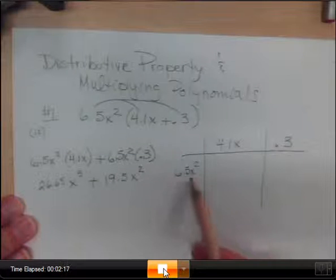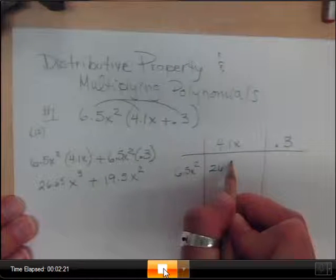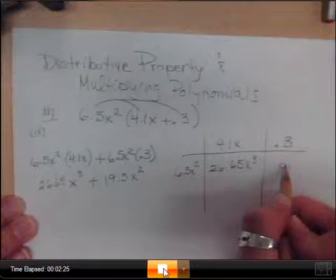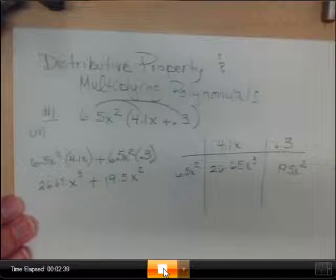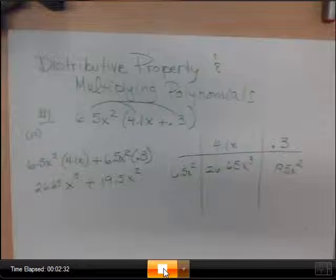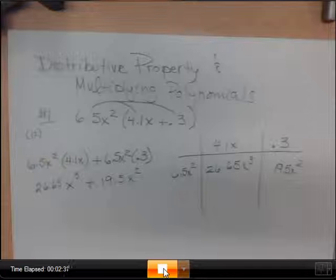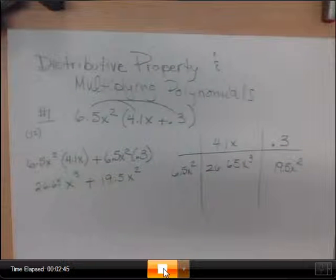So the same thing would happen here. If we were to multiply, we'd get 26.65x³, and we would have 19.5x². And then you would write your solution. Can you add x cubes and x squares? No. They are not like terms. They don't have the same exponent, so you can't add them. So that's just plain old distributive property. But with a little added in with our exponents.